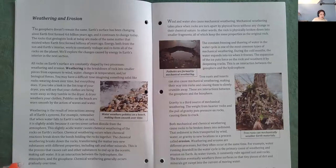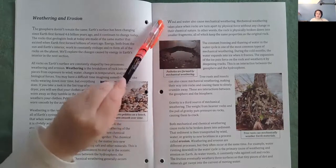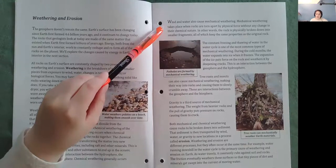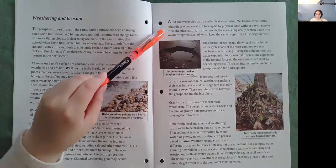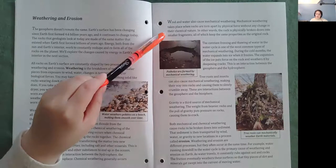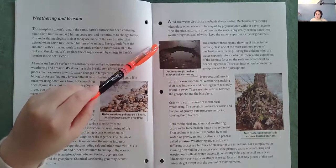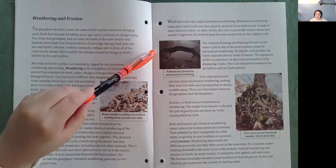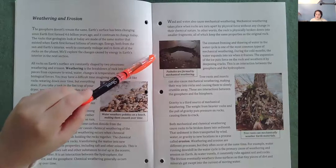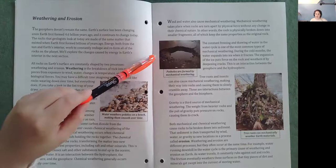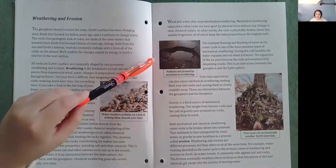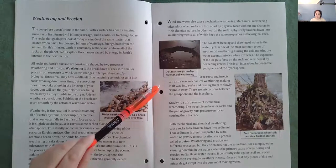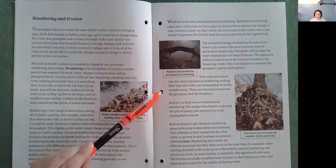Wind and water also cause mechanical weathering. Mechanical weathering takes place when rocks are torn apart by physical forces without any change in their chemical nature. In other words, the rock is physically broken down into smaller fragments, all of which keep the same properties as the original rock. The constant freezing and thawing of water in the water cycle is one of the most common types of mechanical weathering. Tree roots and insects can also cause mechanical weathering, making their way into rocks and causing them to slowly crumble away. These are interactions between the geosphere and the biosphere.